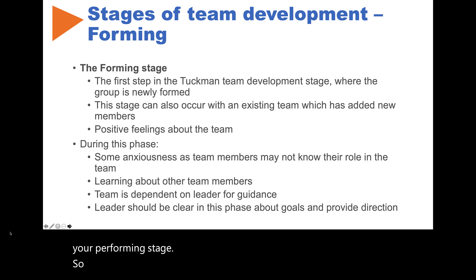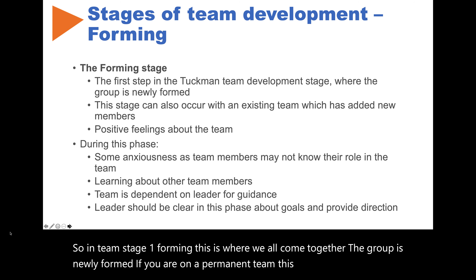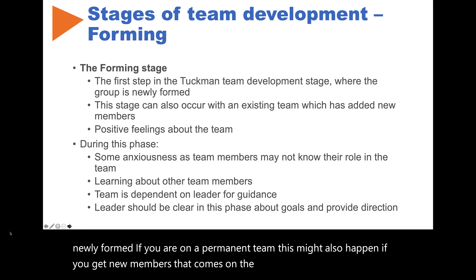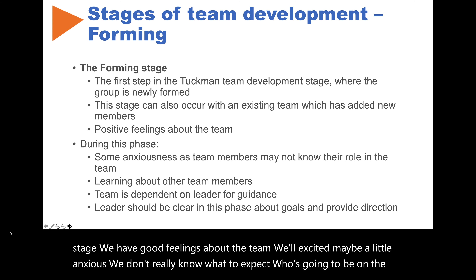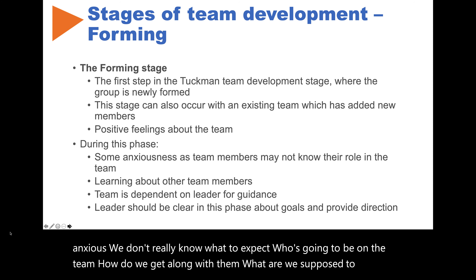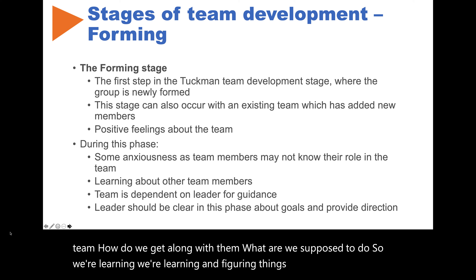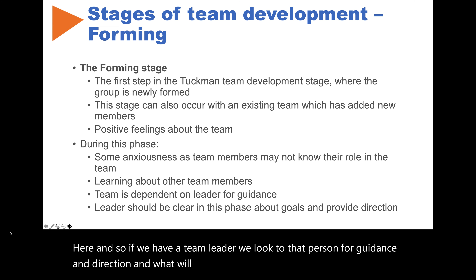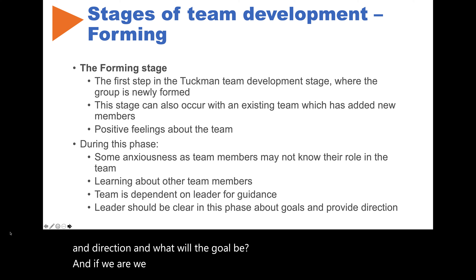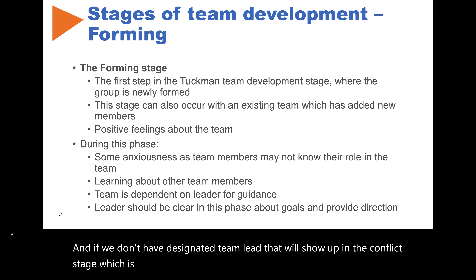In team stage number one, forming, this is where we all come together. The group is newly formed, and if you are on a permanent team, this might also happen when you get new members. This is generally a positive stage — we have good feelings, we're a little excited, maybe a little anxious. We don't really know what to expect: who's going to be on the team, how do we get along, what are we supposed to do. If we have a team leader, we look to that person for guidance and direction. If we don't have a designated team lead, that will show up in the next stage, storming.